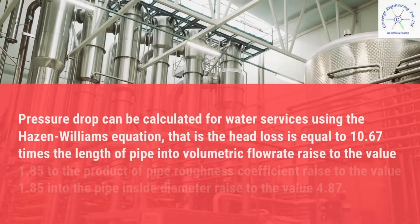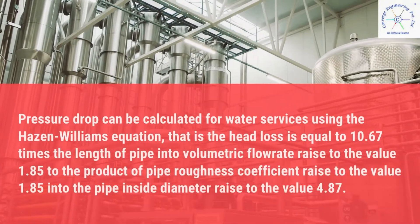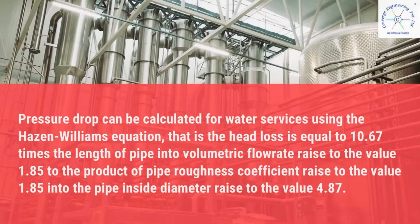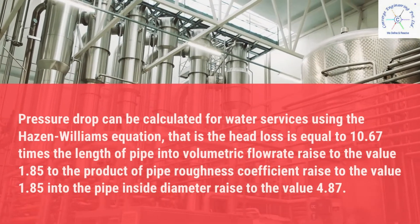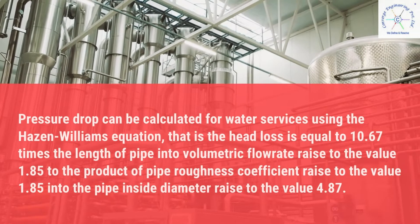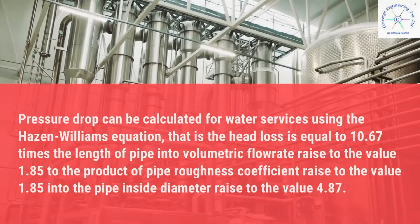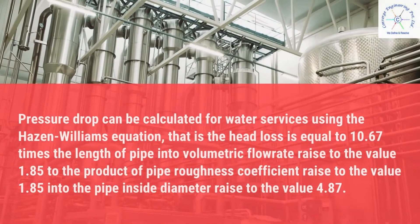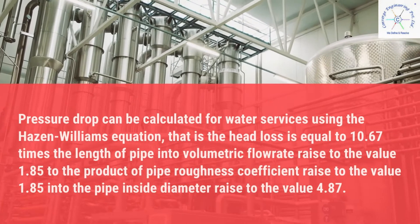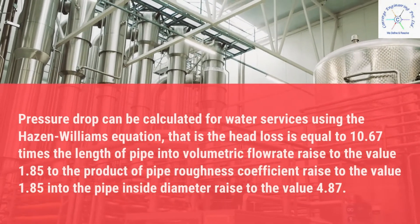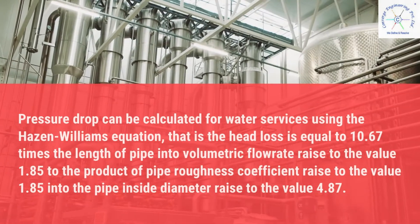Pressure drop can be calculated for water services using the Hazen-Williams equation: the head loss is equal to 10.67 times the length of pipe, multiplied by volumetric flow rate raised to the power 1.85, divided by the product of pipe roughness coefficient raised to 1.85 and pipe inside diameter raised to 4.87.